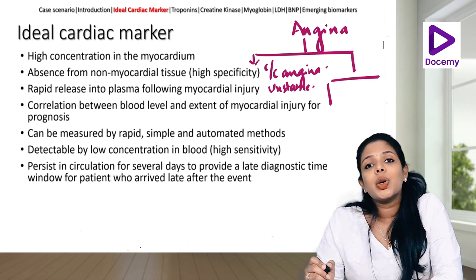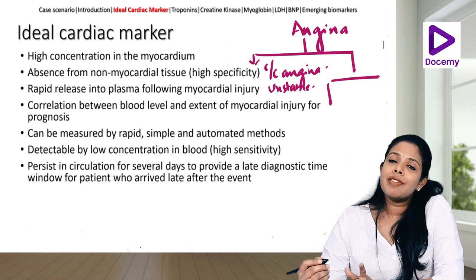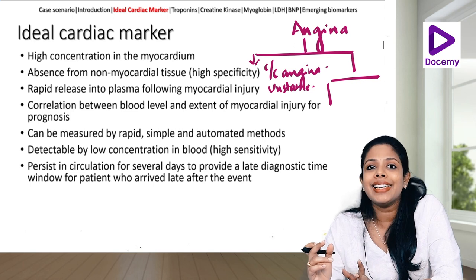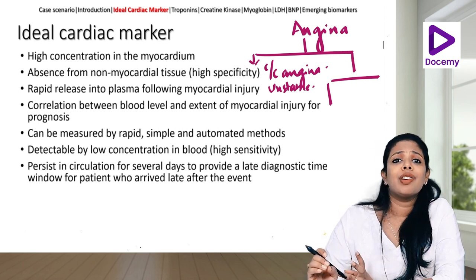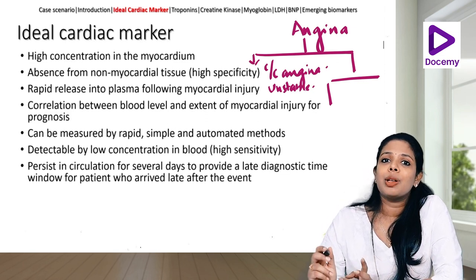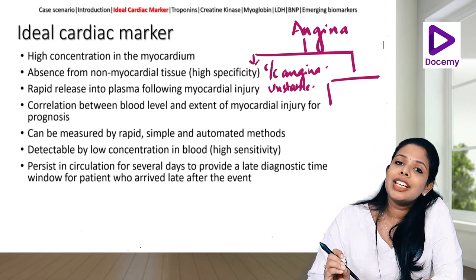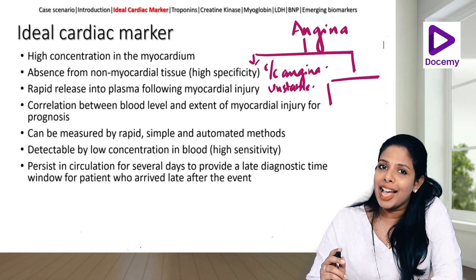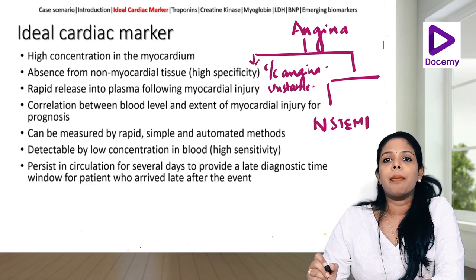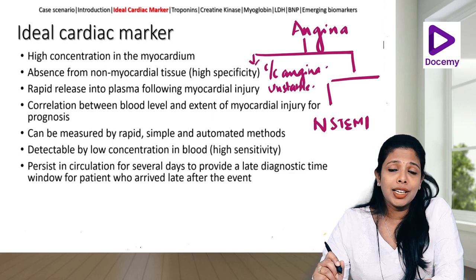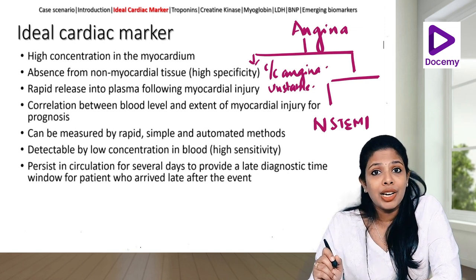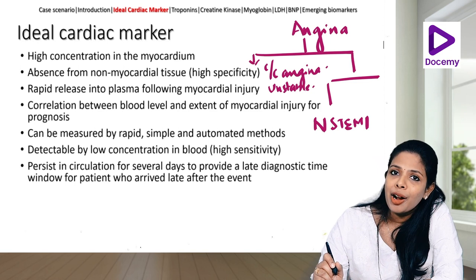Now if you have ECG changes — ST depressions or T inversions not consistent with an acute myocardial infarction or not following an arterial territory — then cardiac biomarkers come into play. If your cardiac biomarkers are elevated in such a situation, it should ideally be taken as NSTEMI (non-ST segment elevation myocardial infarction) where the troponins are positive.